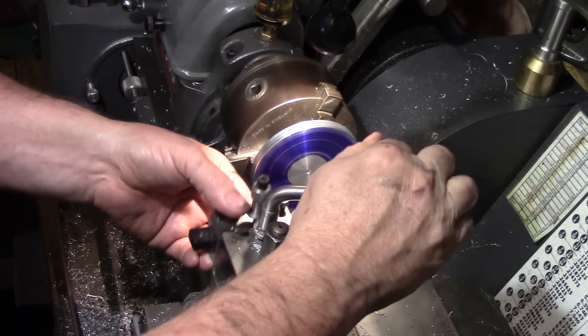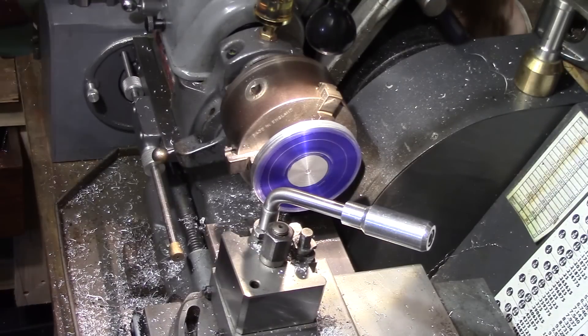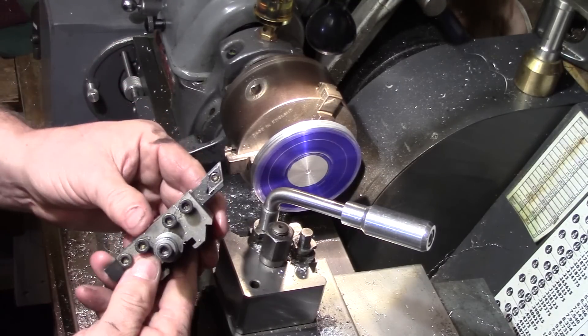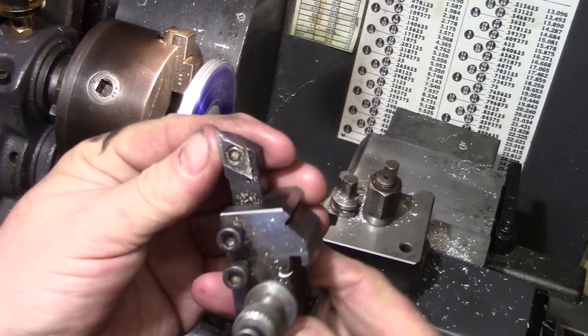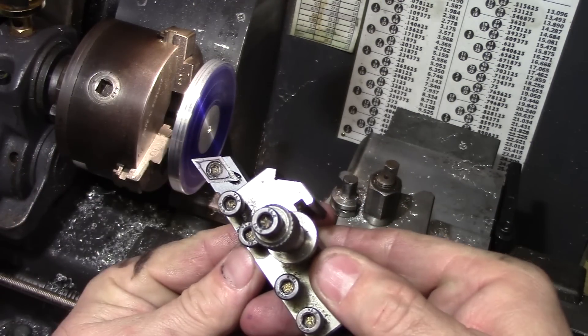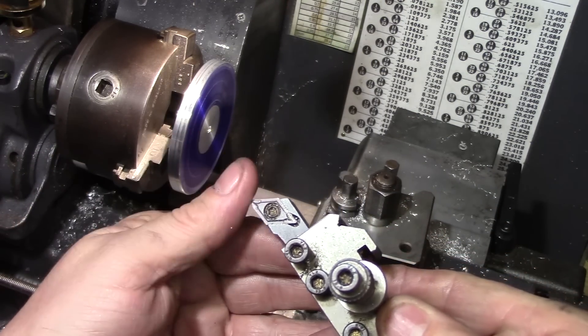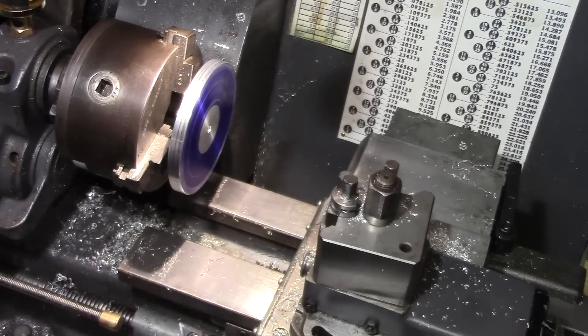I now need to change my tooling from the tool post and swap it out for something that will cut a shallow V-groove into the face of the job. So I'm going to use this carbide cutting tool that has a 55 degree angle on the point and set that so that it's more or less perpendicular to the face of the disc so I can then cut a groove at the PCD.